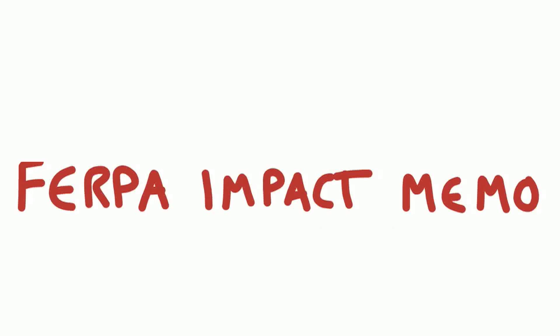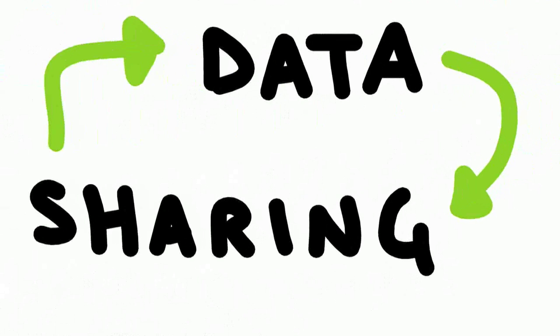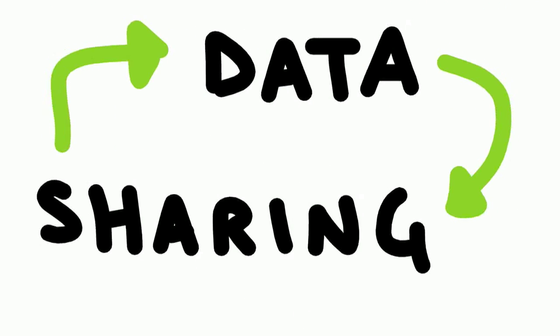Because FERPA applies, there are a whole bunch of requirements about privacy and how you use data that go along with it. So when we release this translated, categorized data to the public, we have to go through a set of processes to make sure that it complies with the statute.